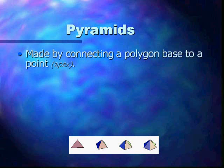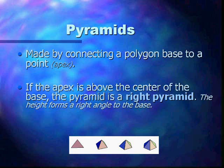Pyramids are made by connecting a polygon base to a point. The point being called an apex. So if the apex is above the center of the base, directly above the center, the pyramid is a right pyramid, means the height forms a right angle to the base.